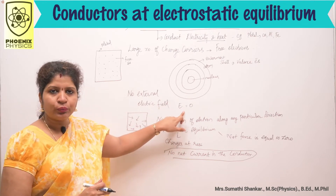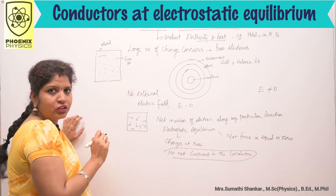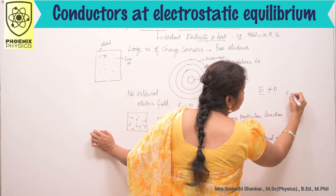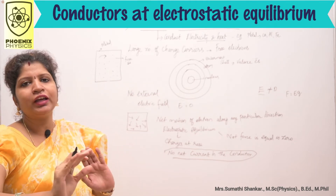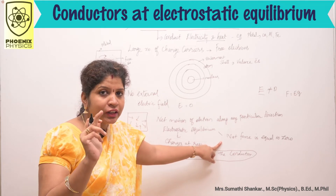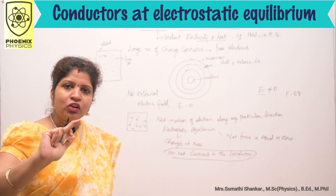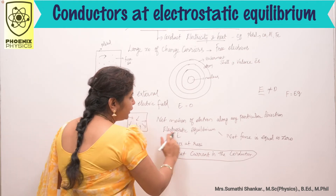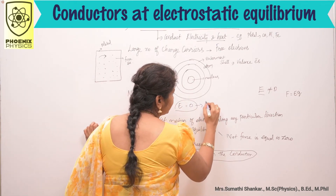First case: E is equal to 0. Suppose E is not equal to 0 — there will be a force on the charge due to this electric field E, and the force is F = Eq. As a result, there will be a net motion of electrons in a particular direction, which contradicts our electrostatic equilibrium condition. Electrostatic equilibrium means no net current in the conductor. So suppose E is not equal to 0, the electrons move in a particular direction and we get net current, which contradicts electrostatic equilibrium. So our conclusion is: E is equal to 0 inside the conductor.